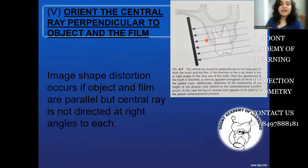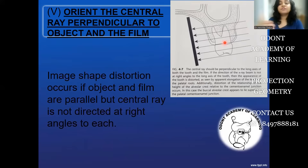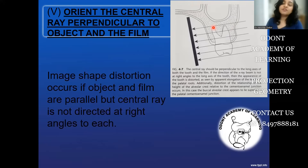The fifth principle says we must orient the central ray perpendicular to both the long axis of the object and the long axis of the film. Even if the film and tooth are placed parallel to each other, it is of no use if the x-ray beam is not perpendicular to both structures. Incorrect vertical angulation — whether decreased or increased — will lead to either elongation or foreshortening of the image, respectively.